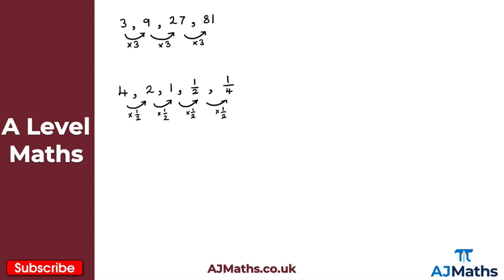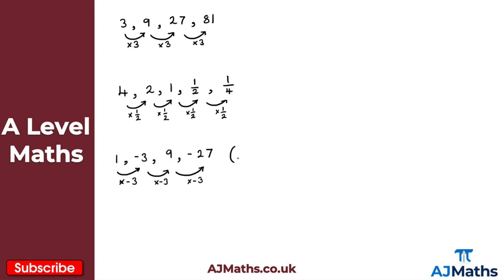We might also have a geometric sequence with what we call an alternating sequence. For example: 1, minus 3, positive 9, and minus 27. The common ratio here is minus 3. Multiplying by minus 3 each time: 1 times minus 3 gives minus 3, minus 3 times minus 3 gives positive 9, and 9 times minus 3 gives minus 27. This is what we call an alternating sequence.